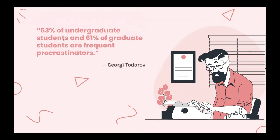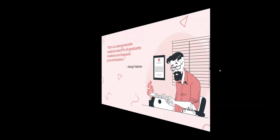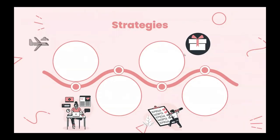Did you know that 53% of undergraduate students and 61% of graduate students are frequent procrastinators? I too am a victim of procrastination and so are a lot of other college students, so it's a big issue that needs to be addressed. Some strategies to combat procrastination: you can limit your distractions such as turning your phone off or putting it on airplane mode or do not disturb mode. Whenever I get a notification on my phone I always want to look at it, and I know others face the same challenge, so turning it off will help you a lot.